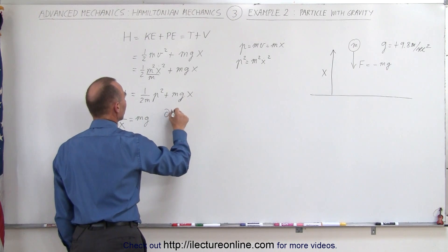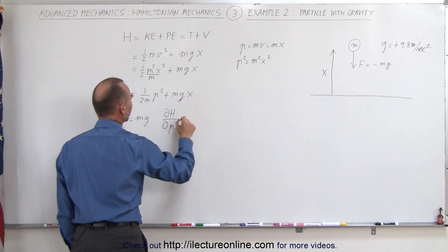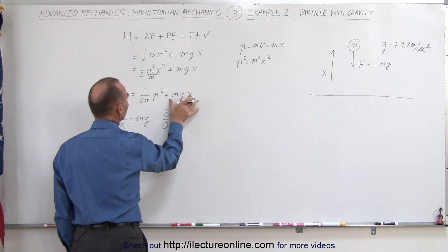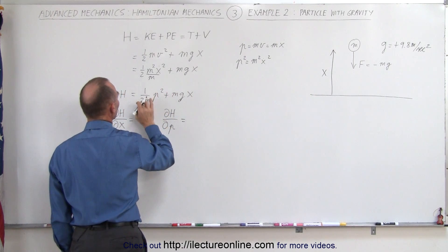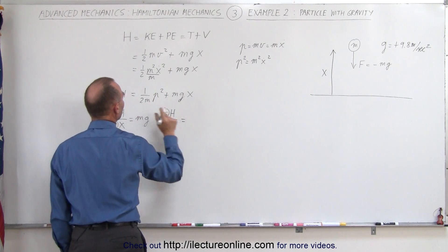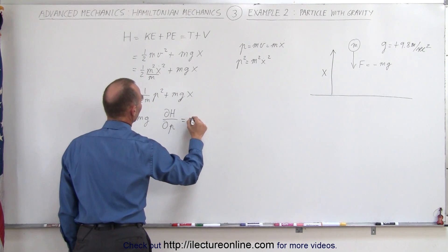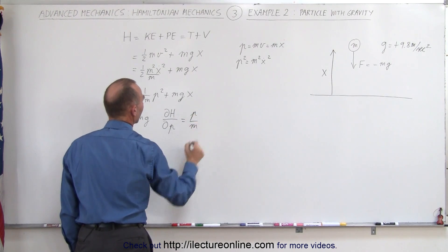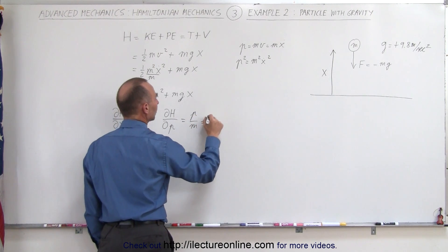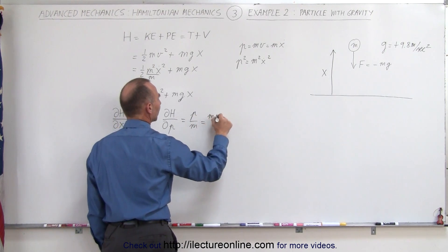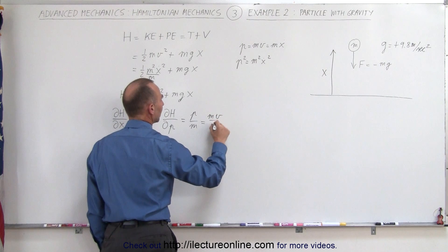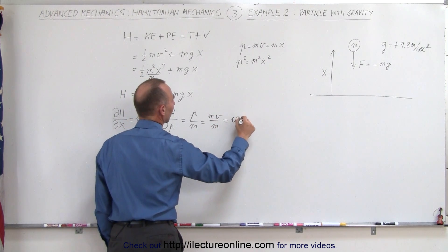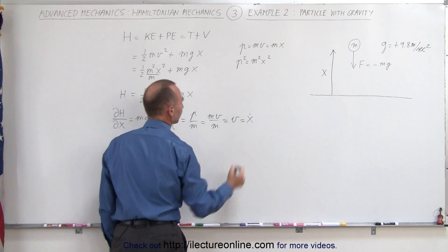We can also take the partial of the Hamiltonian with respect to momentum. When we do that, the potential energy term goes to zero, and here we get two times one-half is one, ending up with p over m. Realizing that momentum is equal to mass times velocity, you can then see that the m's cancel out and we end up with velocity, which is equal to x dot.